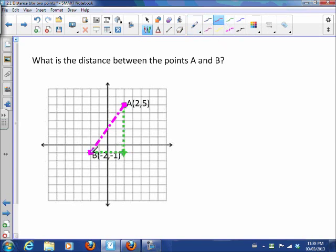So this horizontal distance here is just 1, 2, 3, 4. The vertical distance here is just 1, 2, 3, 4, 5, 6.